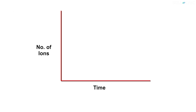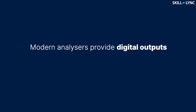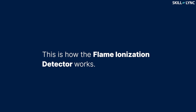The result will be in the form of a graph with time on the x-axis and the number of ions on the y-axis. Whenever the sample contains hydrocarbons, the carbon ionizes, resulting in an ionization current which is represented as a spike in the graph. Modern analyzers are capable of giving digital outputs. This is how the flame ionization detector works.